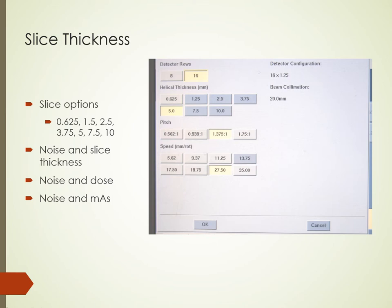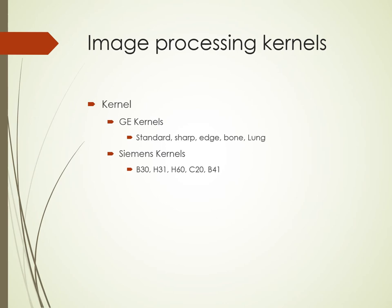When the slice thickness is doubled, the noise decreases by a factor of the square root of 2. However, a thicker slice means less detail in images. The choice of image processing kernel is a fundamental and important trade-off between spatial resolution and image contrast or noise. In Siemens, lower-numbered kernels have better contrast or less noise but have poorer spatial resolution. Higher-numbered kernels like H60 have more noise or poorer contrast but higher spatial resolution. This is also true for GE kernels, where a standard kernel gives poorer spatial resolution but less noise, while bone kernels have higher noise but better spatial resolution.